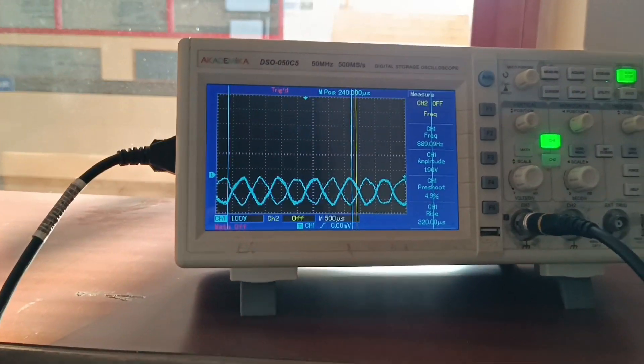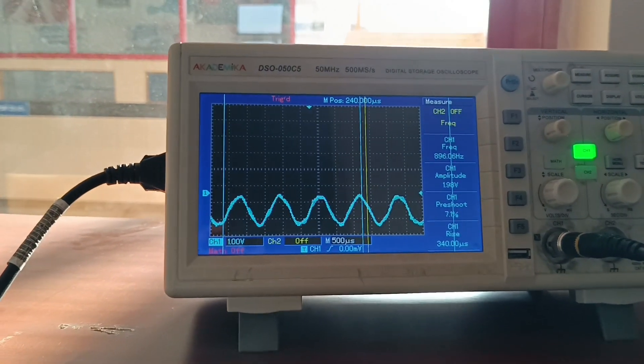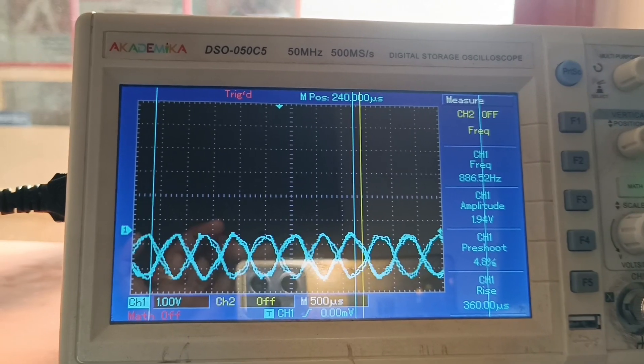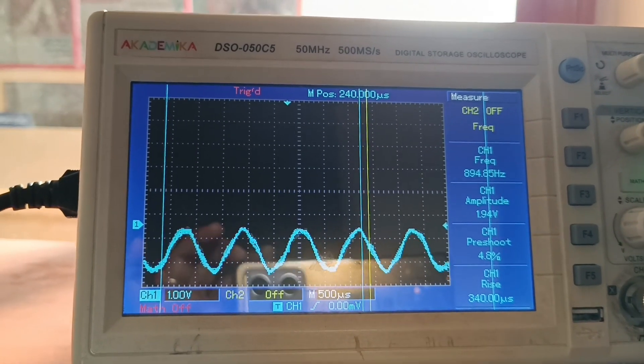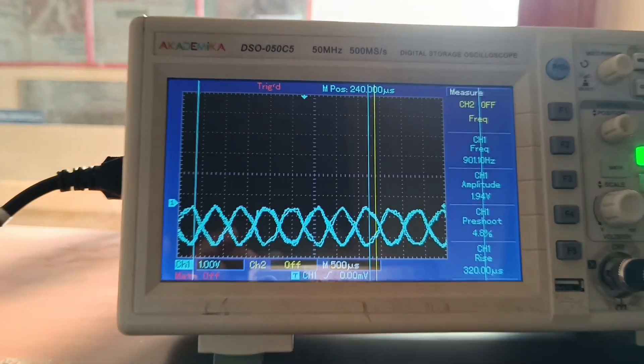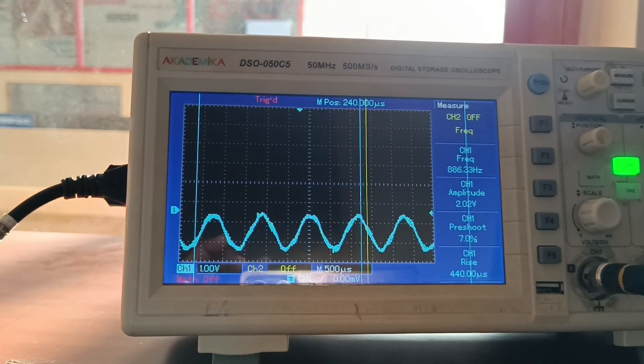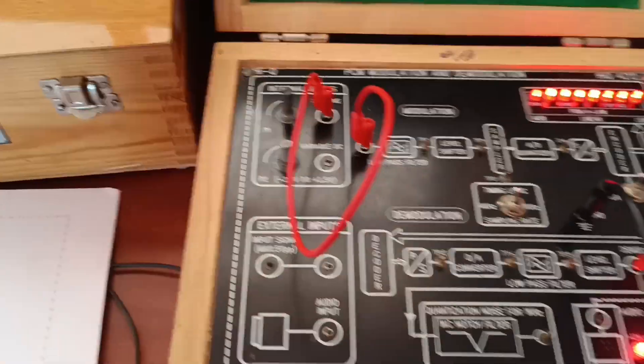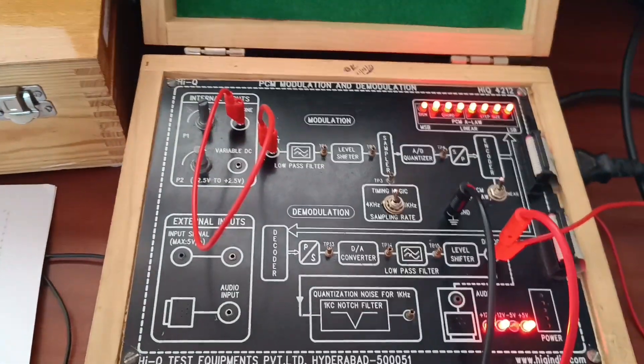We will get this. Whatever message signal we have sent, we received at the output side. Frequency of the signal, same. Amplitude of the signal is reduced. No problem. We can, by using amplifiers, we can increase the amplitude of the signal. Important - frequency of the signal is important here. Same, whatever input we have given from the function message signal, same signal we have from here.